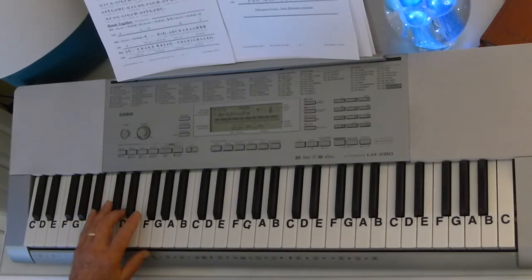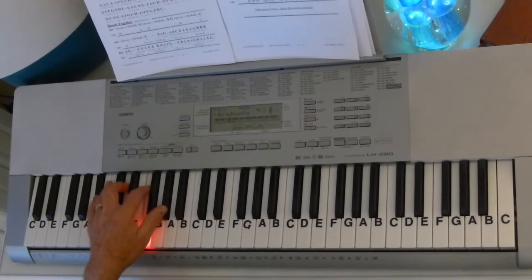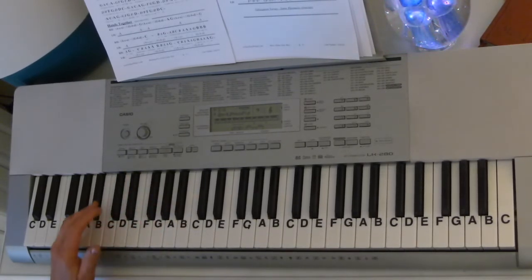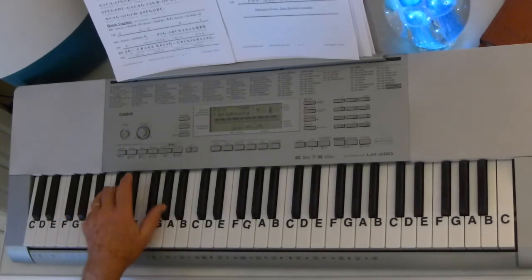Now the B-flat chord is a black, white, white, black, B-flat 7. But all we're going to play is the B-flat, the D, and the A-flat.